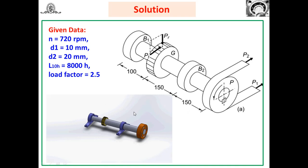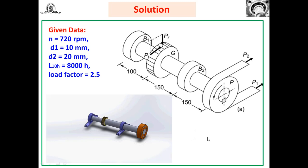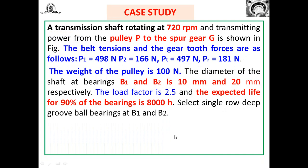The shaft speed n = 720 rpm. The load factor is considered because we carry out a static analysis, but in actual practice, when a spur gear meshes with a pinion, there may be deflection due to elasticity. To account for these dynamic conditions, a load factor of 2.5 is introduced. Similarly, for pulley and chain drives, the load factor accounts for vibrations.